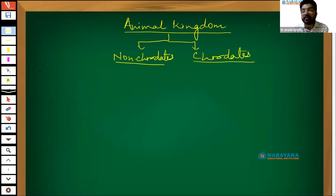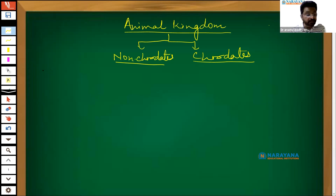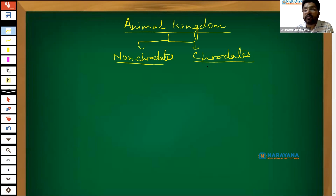This is a chapter in which you have to stick with the NCERT only. The chapter is grouped into two parts: non-chordate and chordate. Today's non-chordate portion should be finished, and tomorrow we'll finish the chordates. I can give you some points which are very important from the NEET examination point of view.